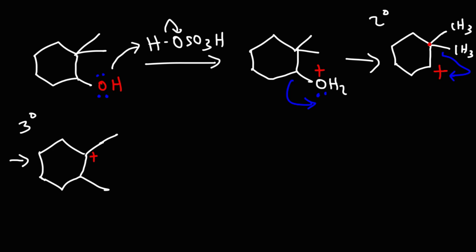So now we can get the different products relative to the carbocation. We can abstract proton 1 and form a double bond here, or we can abstract proton 2 and form a double bond here, or we can abstract proton 3 giving us a double bond there. Which proton will lead to the most stable alkene?